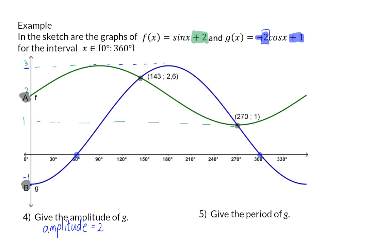Question 5: Give the period of graph G. In grade 10, both the sin and cos graph have a period of 360 degrees. In grade 11, you will see how the period can also be changed by a specific transformation.